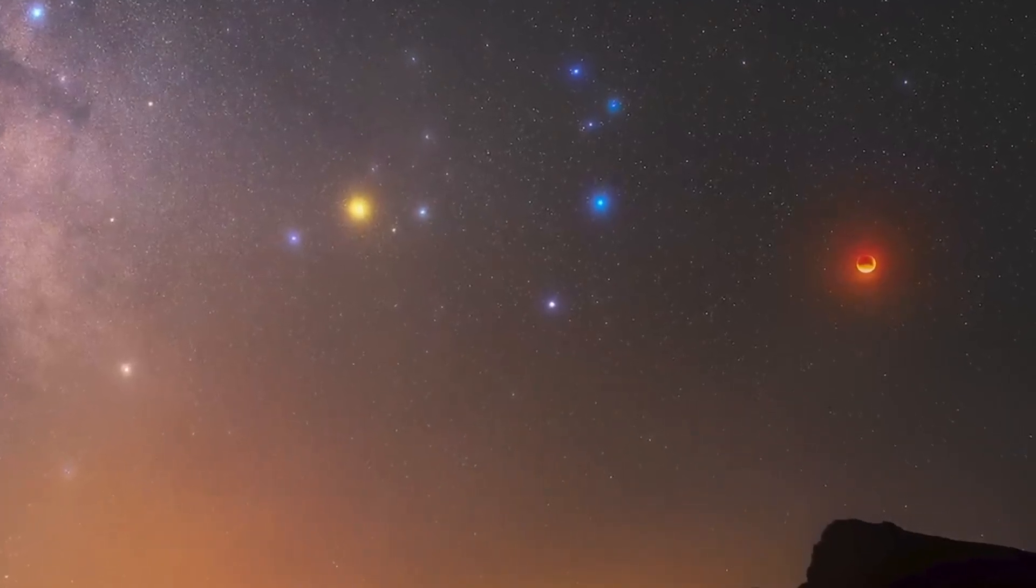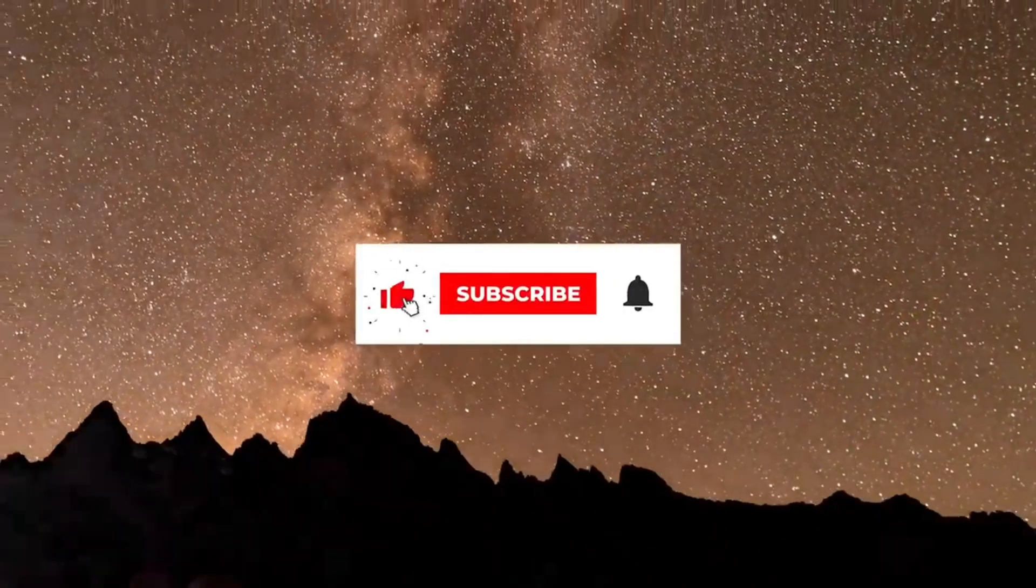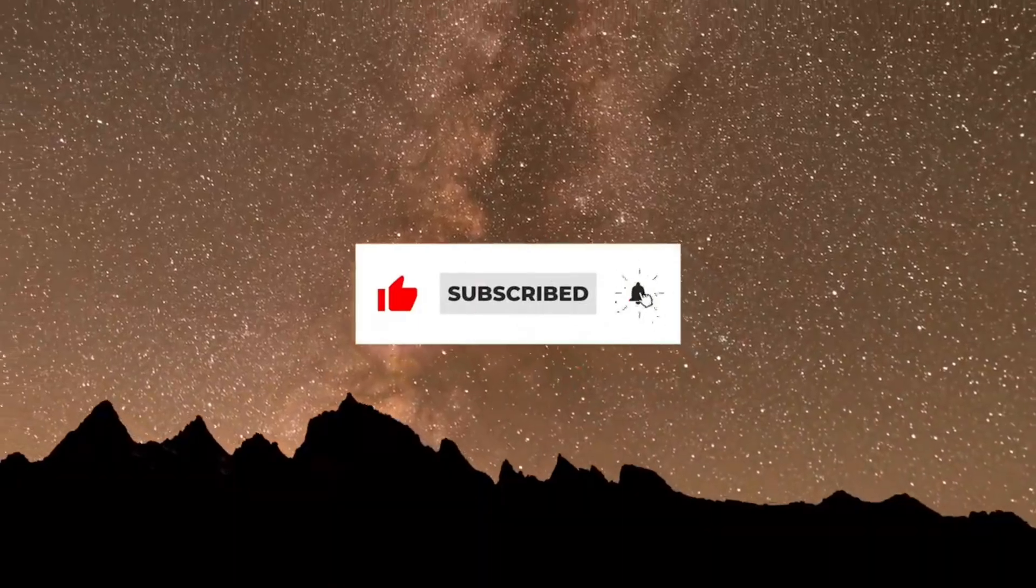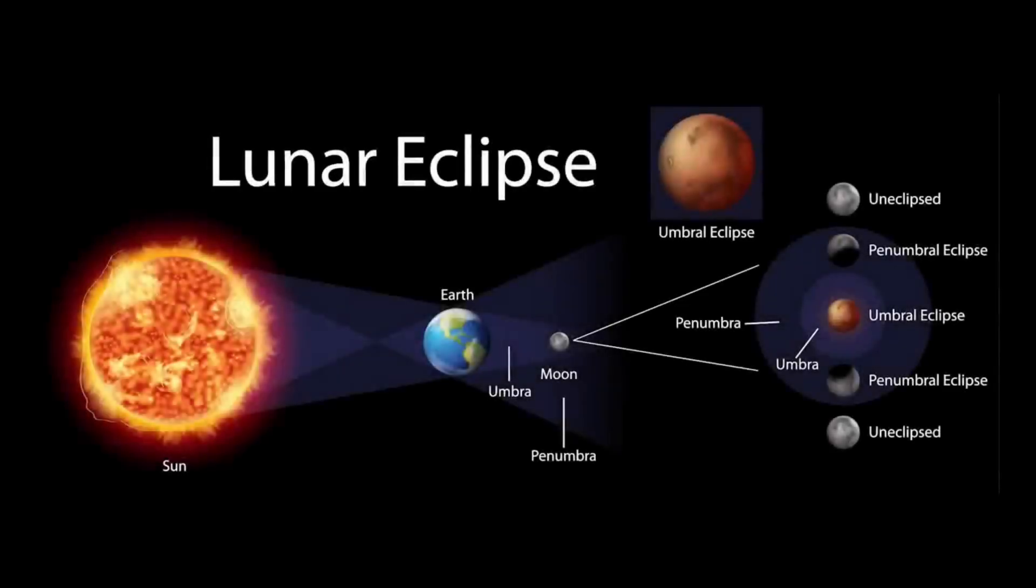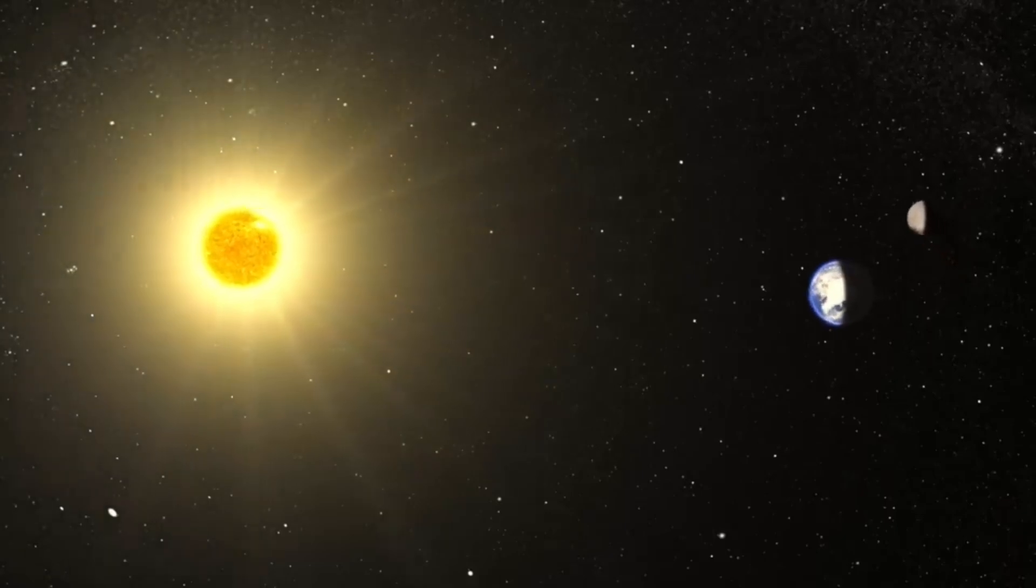Have you ever wondered how scientists can predict a lunar eclipse years in advance down to the exact minute? The answer lies in mathematics. A lunar eclipse happens when the earth comes directly between the sun and the moon. In mathematics, this is called collinearity, when three bodies lie in a straight line.